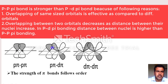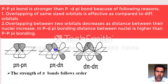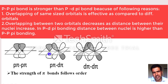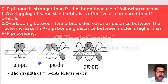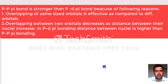Regarding bond strength: pπ-pπ is the strongest pi bond because the overlapping is most effective. In pπ-dπ, the overlap is weaker because one atom has a d orbital and the other has a p orbital — the d orbital is larger and the internuclear distance is greater, making the bond weaker. So the order of strength is pπ-pπ > pπ-dπ > dπ-dπ.